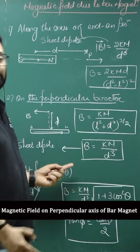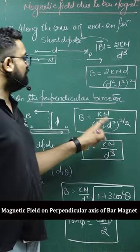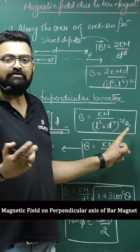If the dipole is short, short dipole means D value is greater than L. And what is the original? Km upon L square plus D square, raised to 3 by 2.